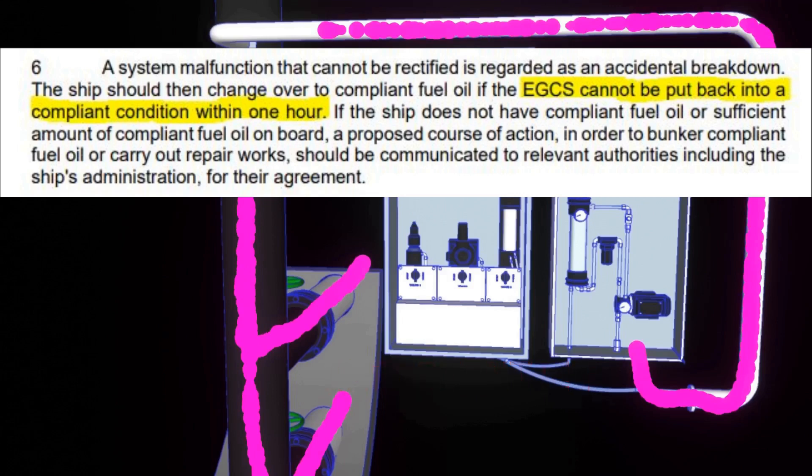Any parameter that goes beyond the allowable limits will trigger an alarm on the MCP or the TSP. The alarm could be critical or non-critical. Critical alarm means that the scrubber is already non-compliant and something must be done within one hour to rectify the trouble, otherwise the vessel will have to switch over to compliant fuel.